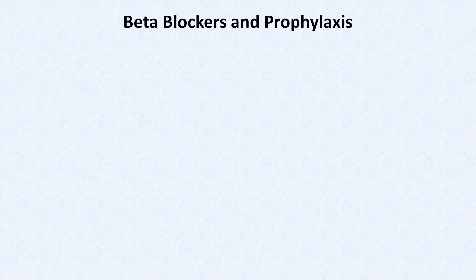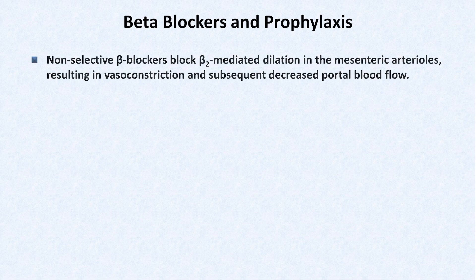In addition to prophylactic endoscopic treatment, patients can also receive prophylaxis against variceal hemorrhage with beta blockers. Non-selective beta blockers block beta-2-mediated dilation in the mesenteric arterioles, resulting in vasoconstriction and subsequent decreased portal blood flow.